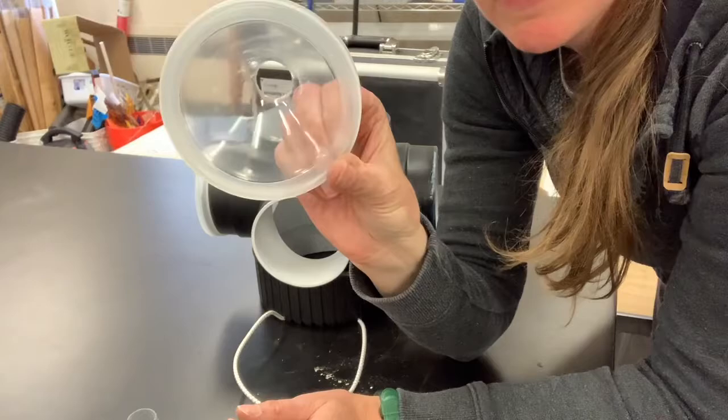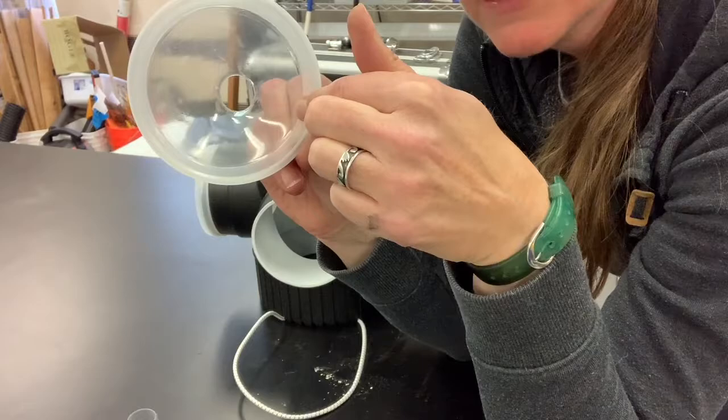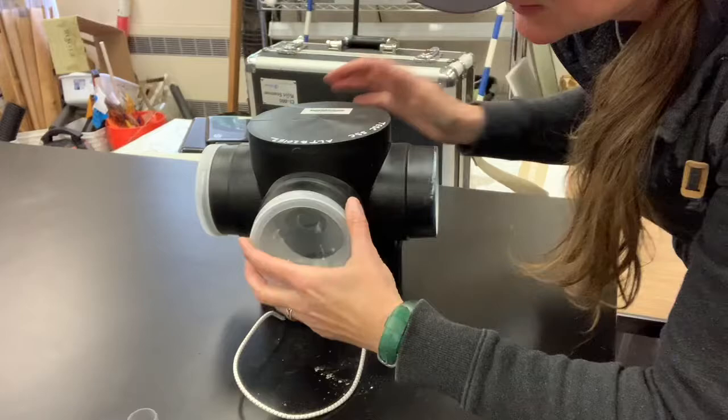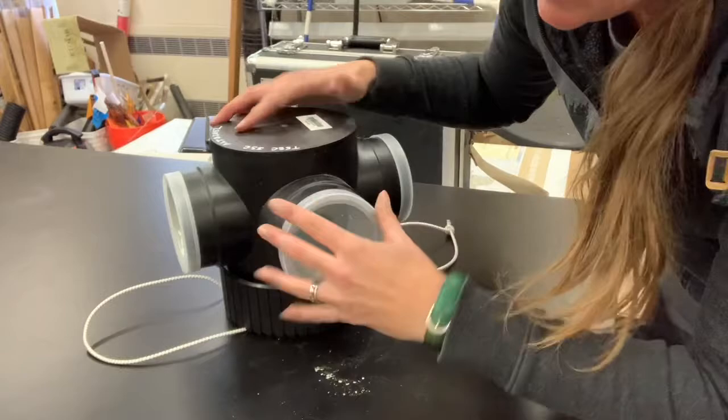The insects are going to fly inside the trap from all four sides, and then it's unlikely they would find their way back out that little tiny hole.